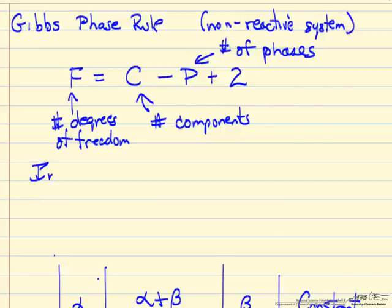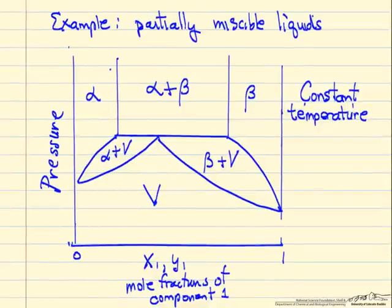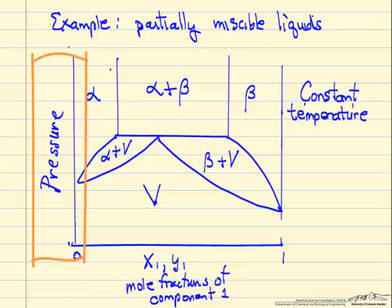Important to keep in mind, we're only talking about intensive variables. So the phase rule tells us nothing about how much of a given phase we have when we have more than one phase. So we'll look at a phase diagram to look at how we apply this phase rule. In this case, we're looking at partially miscible liquids. Pressure on this axis.